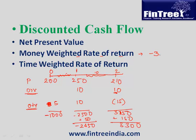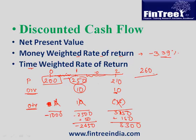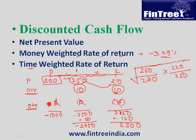The money weighted rate of return is −3.39%. For the time weighted rate of return, calculate holding period returns ignoring quantities. Period 1: stock went from 200 to 250 with a Rs.10 dividend, so HPR = 260/200. Period 2: stock went from 250 to 210 with Rs.10 dividend, so HPR = 220/250. Take the geometric mean (square root of the product of these two HPRs) to get a time weighted rate of return of 6.95%.